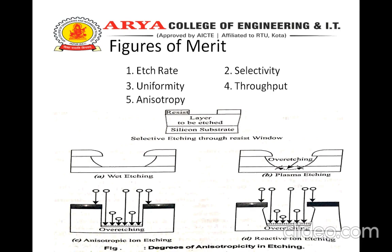Plasma etching, reactive ion etching, and sputter etching fall in the single-wafer category. Alternatively, there are local or beam-scanned processes where the processing is done by traversing a beam. The processing here, though possibly far more accurate, is likely to be much slower. Ion beam processes like ion milling and FIB fall in this category.